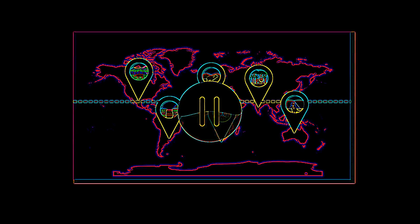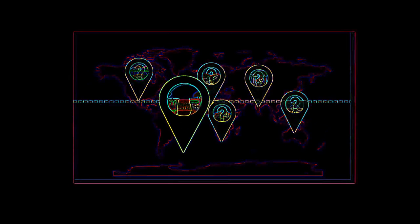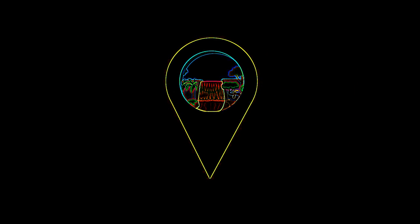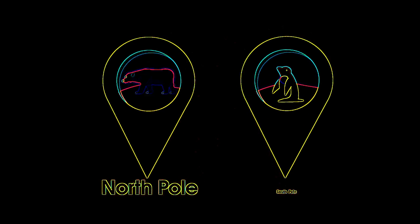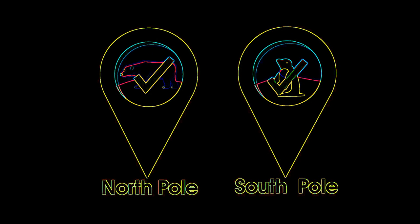Habitats at the equator, such as tropical rainforests, usually have the highest biodiversity. So if you thought habitats at the north or south poles, such as the polar desert, you're correct.